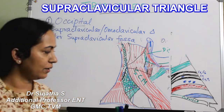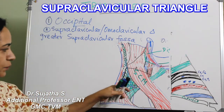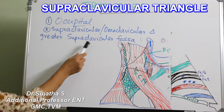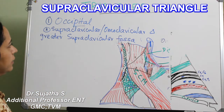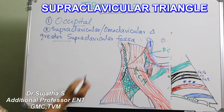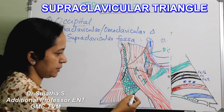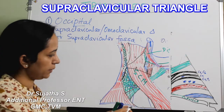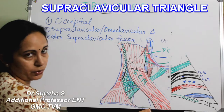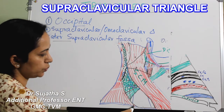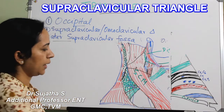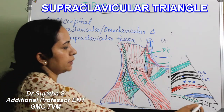The second smaller triangle of the posterior compartment is the supraclavicular or omoclavicular triangle, also called the greater supraclavicular fossa. This area is below the inferior belly of omohyoid, bounded anteriorly by the posterior border of sternocleidomastoid, posteriorly by the anterior border of trapezius, and below by the middle one third of clavicle.